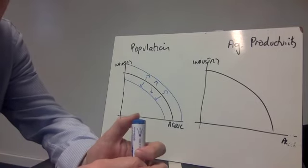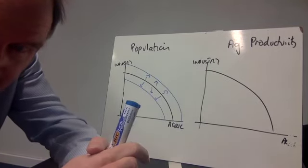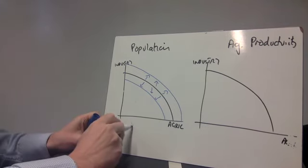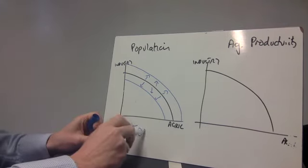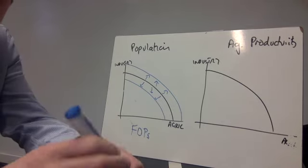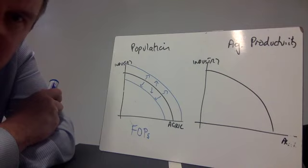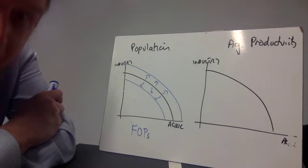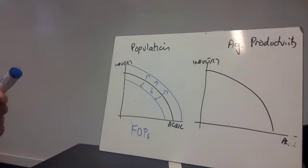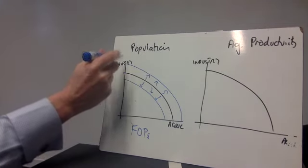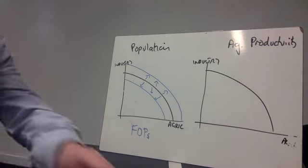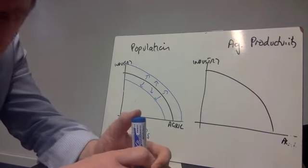But where your decent marks are going to be coming from is if you can say, well, why is that? And what you need to be doing is relating to the idea of factors of production. So labour is a factor of production, and an increase in population means that we have more factors of production available. Therefore, the economy is able to produce more. If it put all of its resources into industry, we get an increase in that. If it put all of its resources into agriculture, we get an increase in that. And obviously, if we put some into one and some into the other, we get an increase in both.